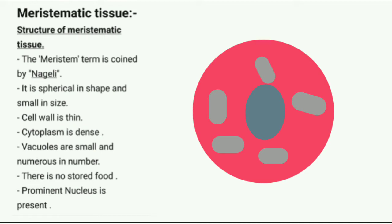There is no stored food. A prominent nucleus is present, meaning it is large in size and can easily be seen under a microscope. On the screen, you can see the image of the meristematic tissue, which is spherical in shape with numerous small vacuoles and a prominent nucleus.